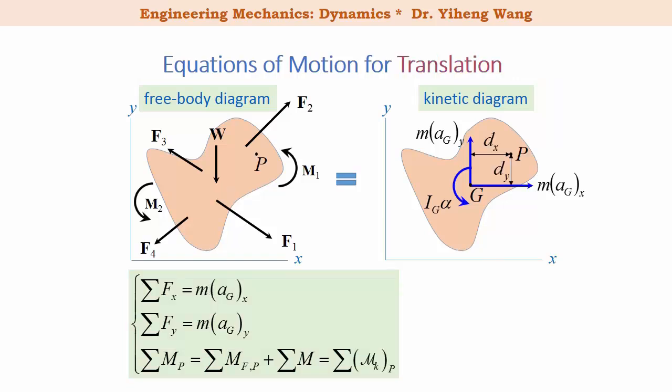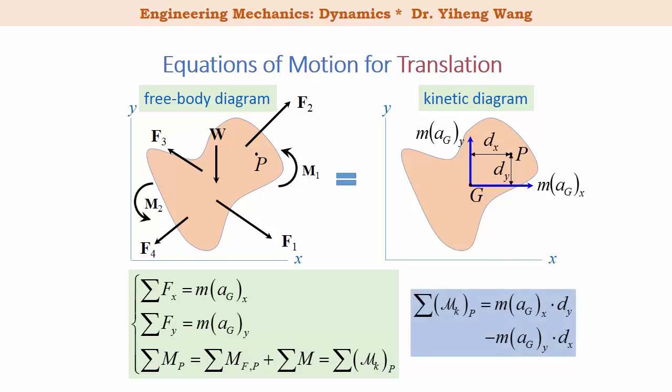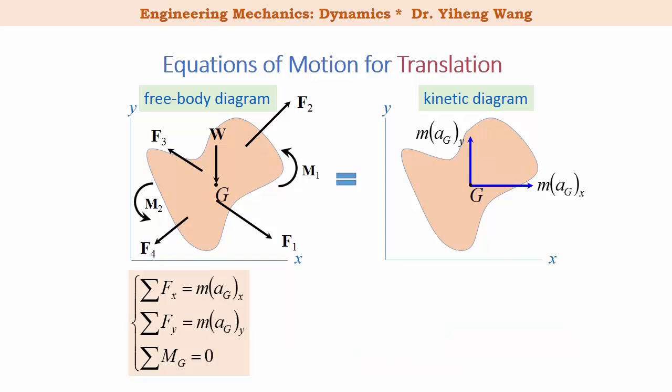If the rigid body is undergoing translation, meaning it is not rotating about any axis, the rotation term IGα disappears from the kinetic diagram. Therefore, the kinetic moment about point P only includes the moment caused by the two inertia forces maGx and maGy. If the resultant moment is summarized about point G, the mass center, then the resultant moment simply equals zero.